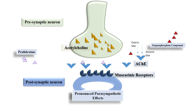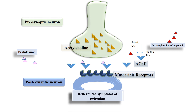Now, as the enzyme is again activated, it will again cause the degradation of acetylcholine and terminate the action of acetylcholine, which relieves the symptoms of organophosphate poisoning.